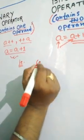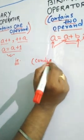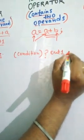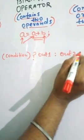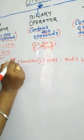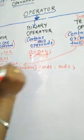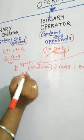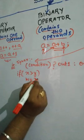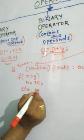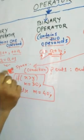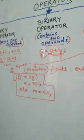The syntax of a ternary expression is: first is the condition, then a question mark, then output one, then a colon, then output two, and a semicolon. For example, consider this: if x is greater than y, the value of m equals 30, else the value of m equals 40. We are going to convert this if-else into a ternary expression.